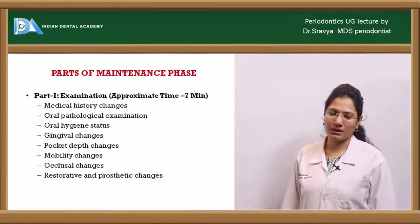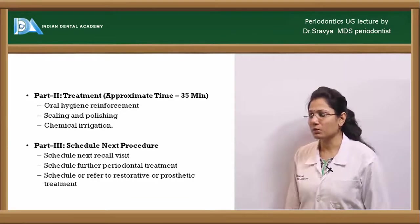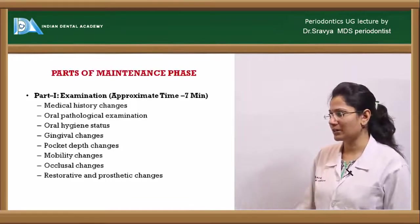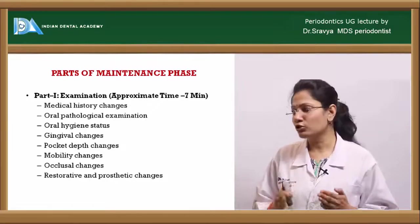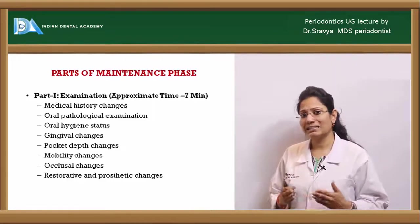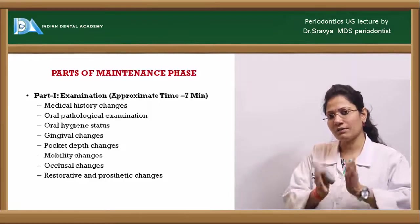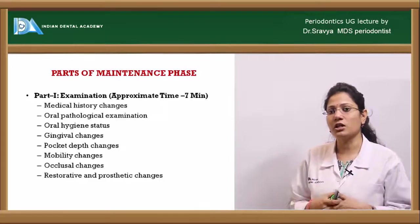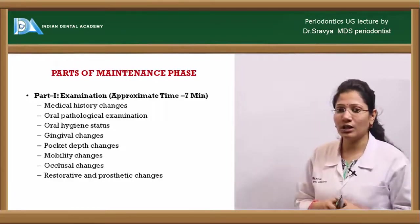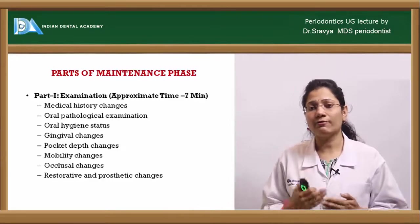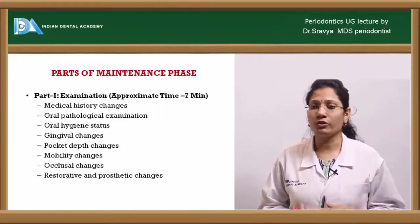Let us now look at the parts of the maintenance phase. Part 1 is examination, Part 2 is treatment, and Part 3 is the schedule for the next appointment. For Part 1 — examination — you should allocate approximately 7 minutes to examine the patient during the follow-up visit, checking for medical history changes and whether anything has changed since the first visit.